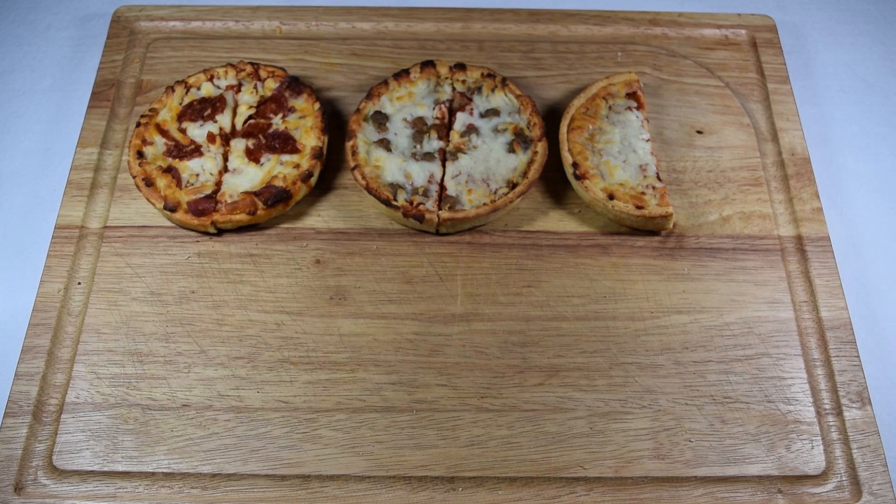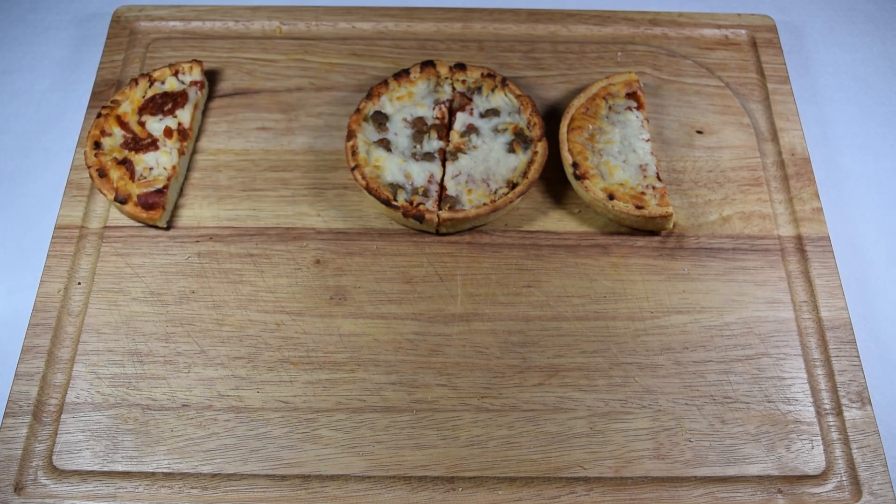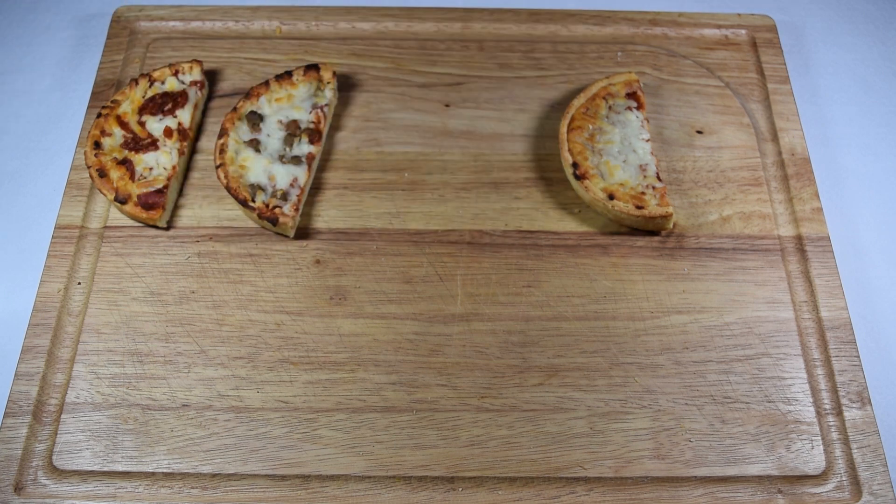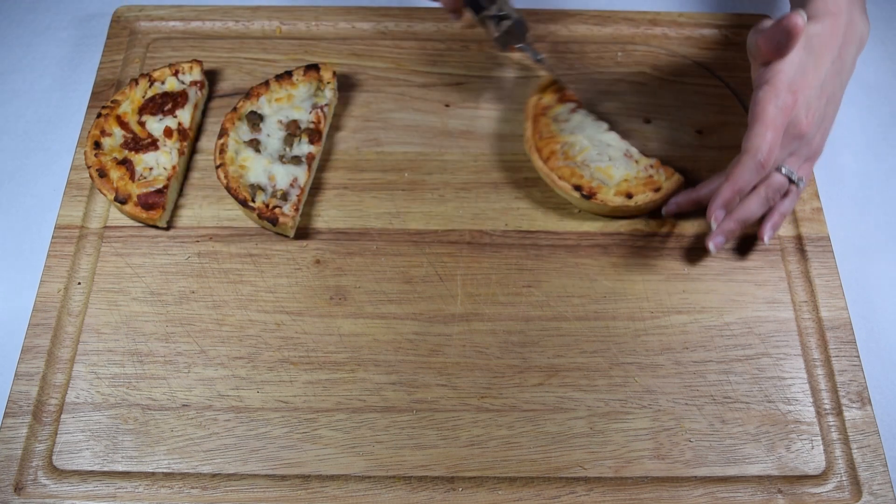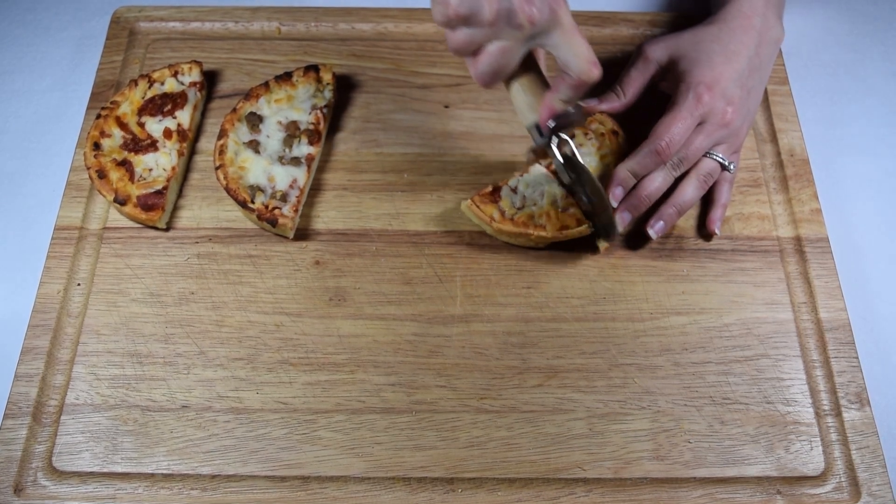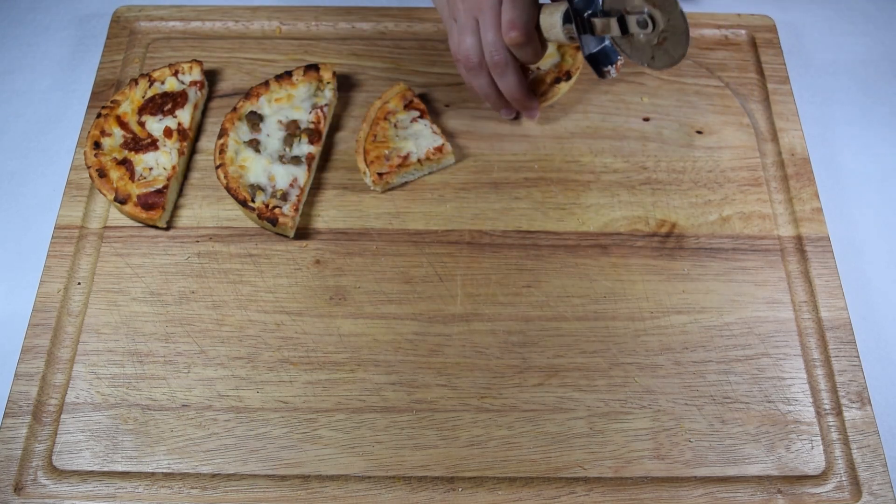You're at an all-you-can-eat pizza buffet. There are two and a half pizzas left. You decide you're going to take half of the pizza that's left so the people behind you still have some. So we start out, you take half of the pepperoni pizza, you take half of the sausage pizza, but there's only half of a cheese pizza left, so you have to cut that in half, which means you wind up eating a fourth of the cheese pizza.